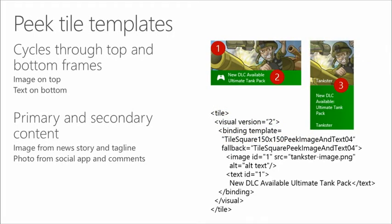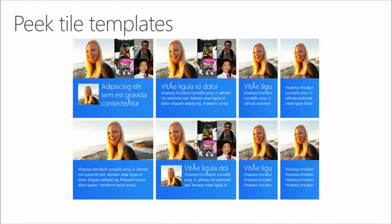There are also peek tile templates, where the tile peeks up to show some extra information. For instance, a game tile might show that a new DLC is available. It's a brief animation that draws attention to the user because the tile is alive and animating. There's a collection of peek tile templates — a first tile and second tile with animation between them.